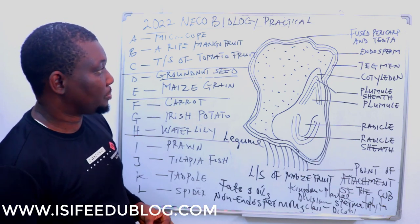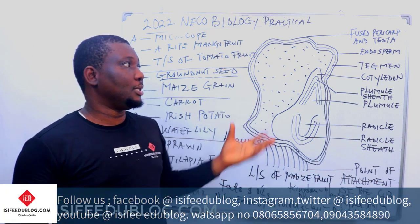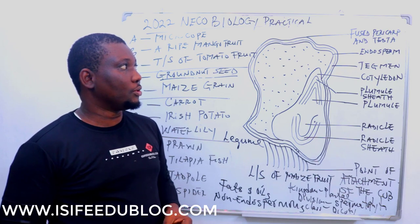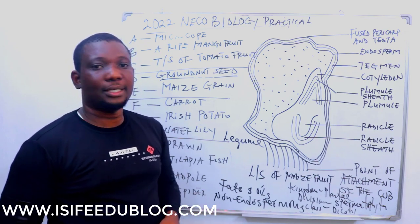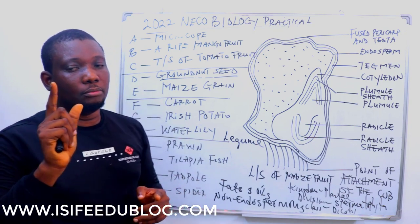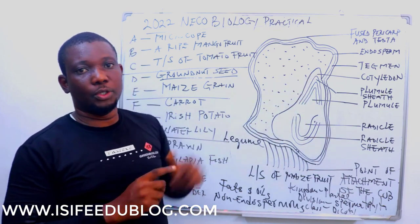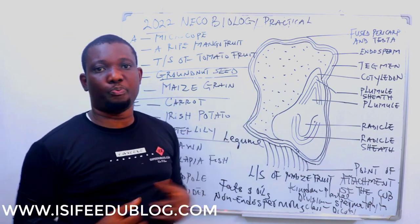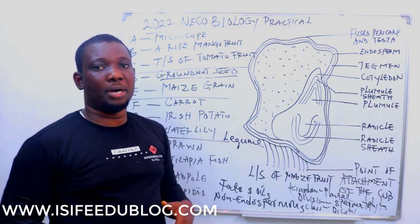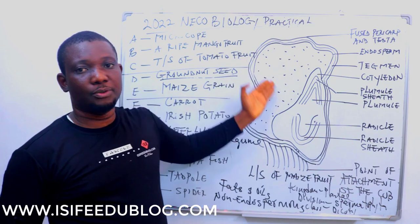Looking at specimen E critically in terms of structural observation — observing the features — when you section it you see a triangular shape. You can also see that there is a testa, a pericarp and testa, an endosperm, and a cotyledon. The cotyledon occupies a portion of the whole seed, and instead of just a cotyledon, you have the plumule and radicle. The plumule is protected by the coleoptile and the radicle by the coleorhiza. That is the structural observation.